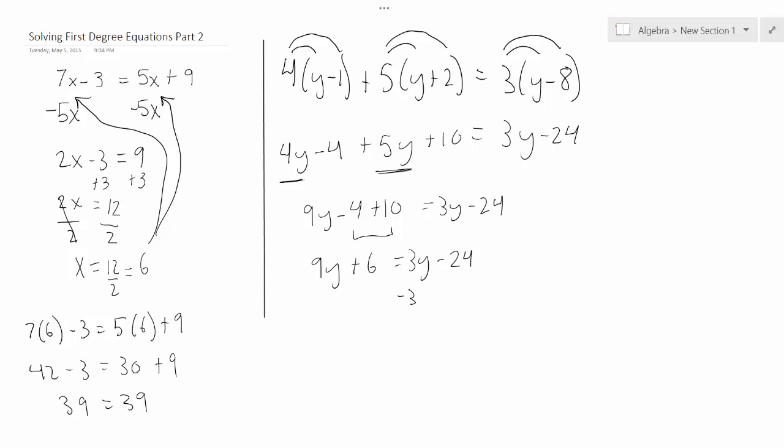Subtract 3y from both sides. That's 6y plus 6 equals negative 24. Subtract 6 from both sides, and 6y equals negative 30. Divide both sides by 6, and you have y equals negative 30 over 6, or negative 5.